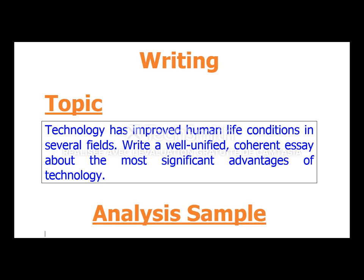Write a well-unified coherent essay about the most significant advantages of technology. There are some key words which are very important in this statement: the first is technology, number two improved, number three life conditions, and number four fields. These are the key words in this statement, which means we are going to focus on them in the analysis.